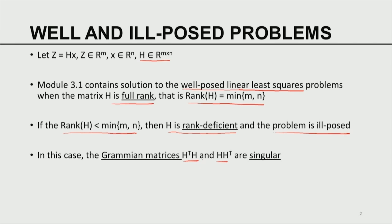That means the determinants are zero, which means at least one of the eigenvalues is zero. If at least one of the eigenvalues is zero, the matrix is not positive definite — it is only positive semi-definite. Positive semi-definiteness of H transpose H and H H transpose leads to singularity, and that means I cannot simply compute H transpose H inverse or H H transpose inverse. I cannot compute these inverses — they do not exist.